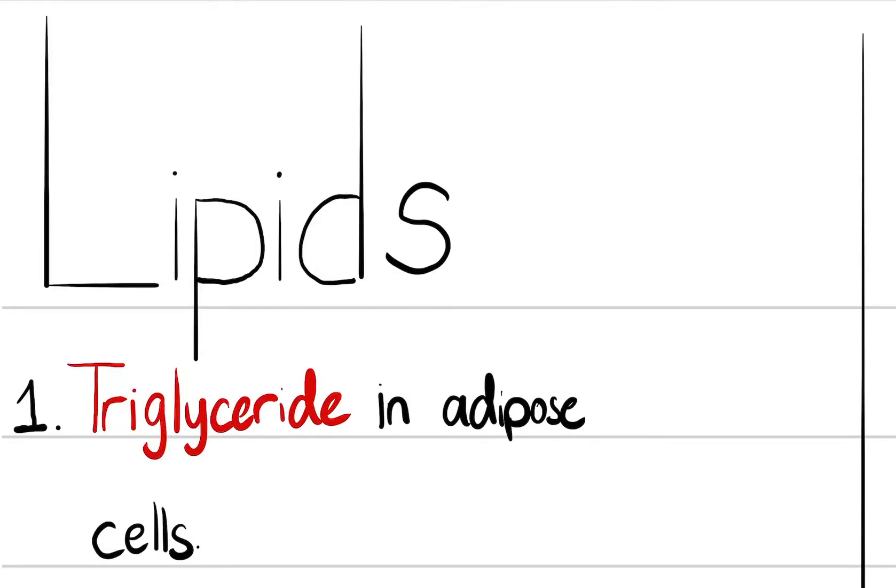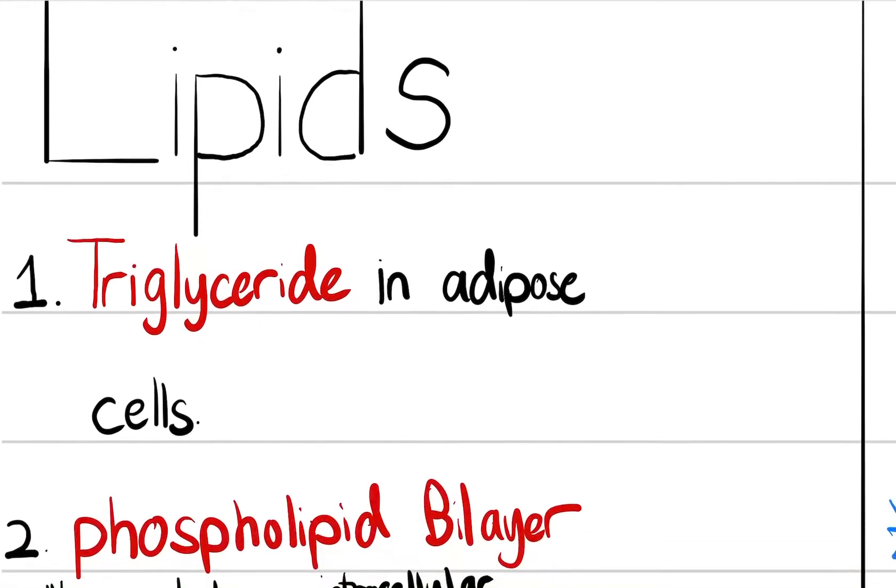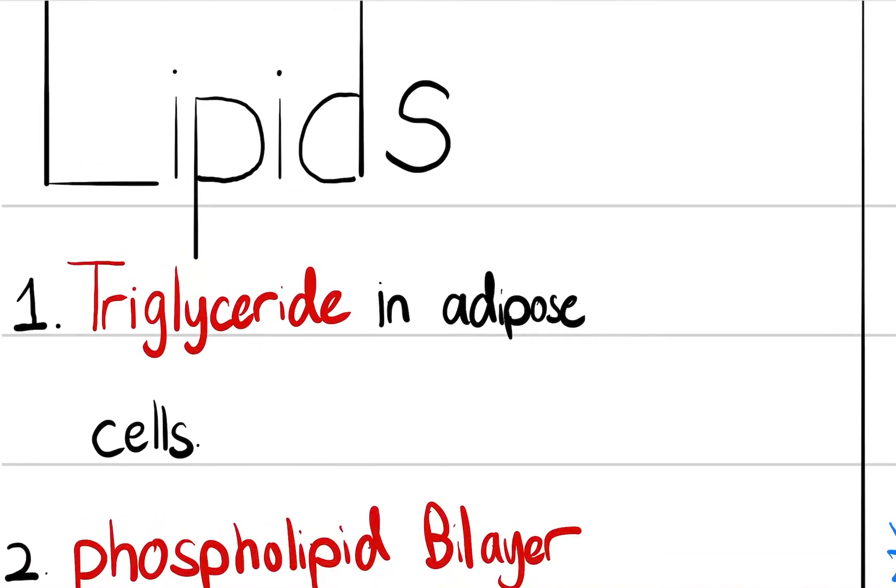Lipids are essentially fatty substances in our body that have three important roles. The first important role of lipid is in the triglyceride molecule in adipose cells. An adipose cell is just a fat cell.